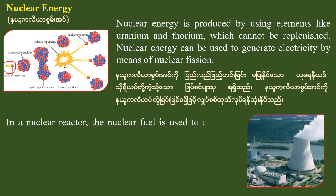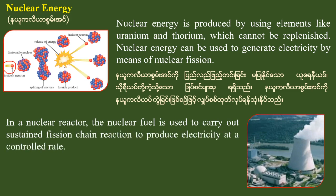The nuclear fuel is used to carry out sustained efficient chain reactions to produce electricity at a controlled rate. If the nuclear fuel gets used, the nuclear fuel will generate a nuclear chain reaction. That is when you have electricity.